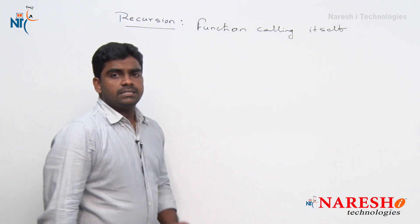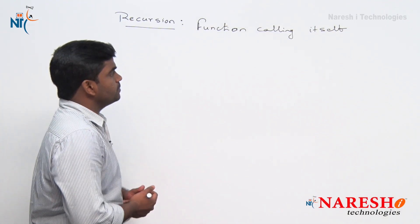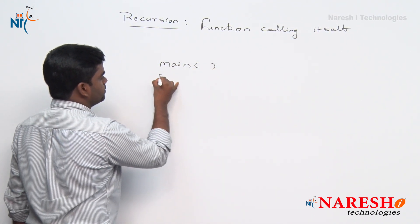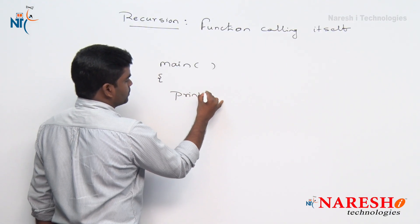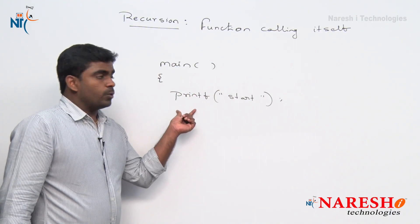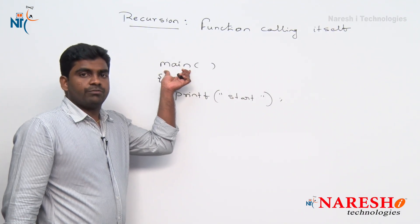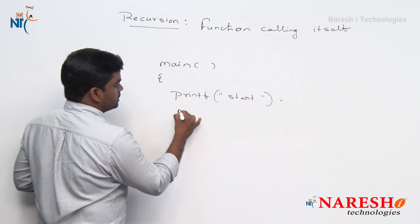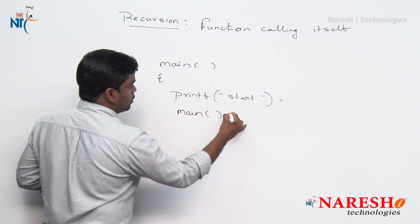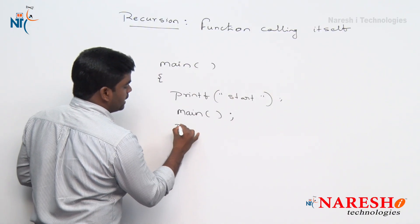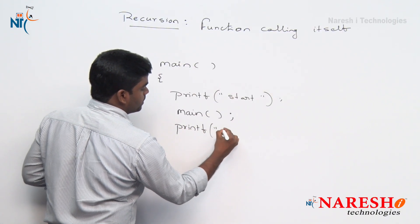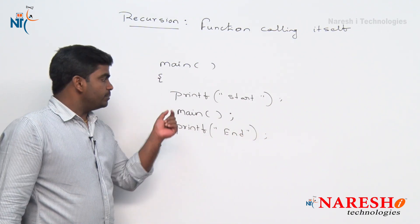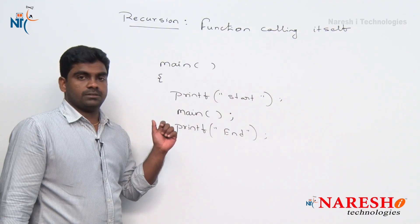Function calling itself is called a recursive function. Here is a simple example: in the main function I am writing one statement printf 'start'. The next statement calls the main method explicitly. First time the main method is executed by the operating system, and the second time we are calling main ourselves. We also have a printf statement printing 'end', so we have two statements — start and end — and in between we are calling the main function.